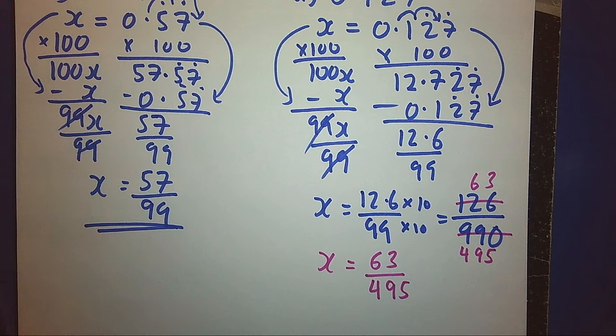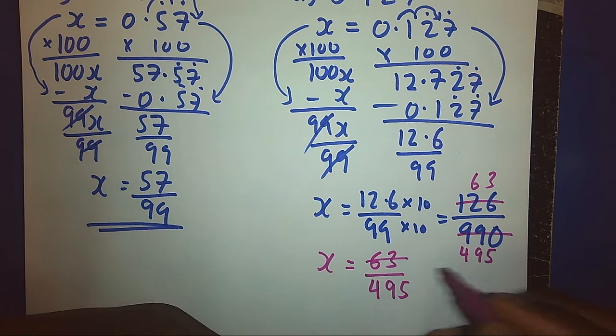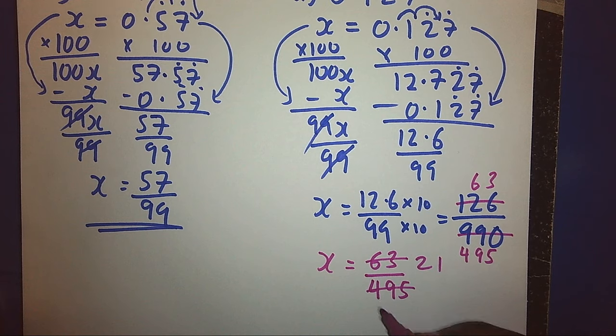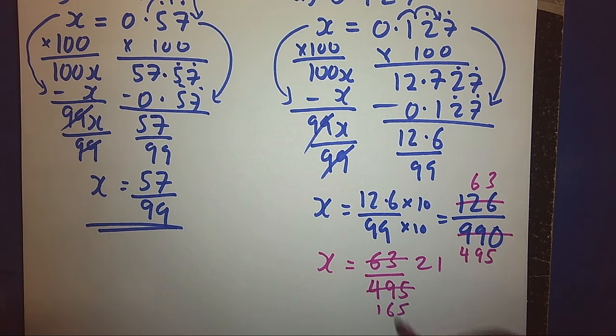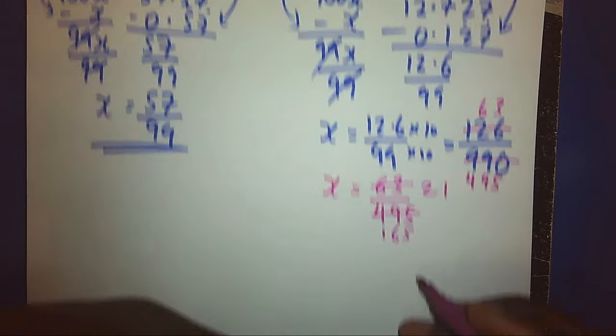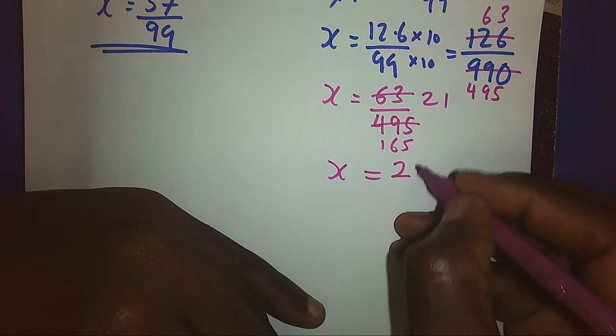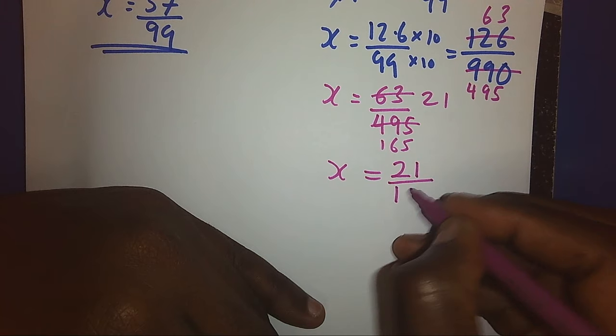When you look at it again, we shall see we have got a division of 3. By 3, we get 21. By 3, we get 1. 19, 18 is 6. 1, 15 is 5. And finally, our x now will be 21 over 165.